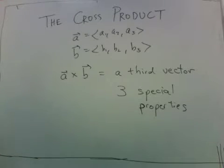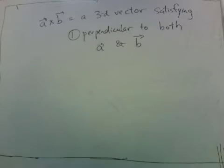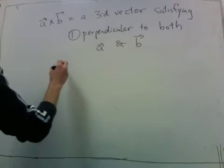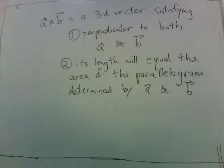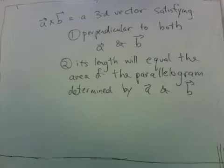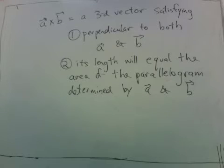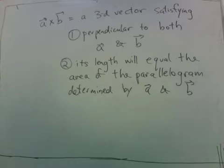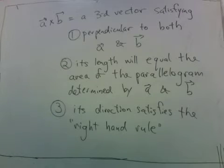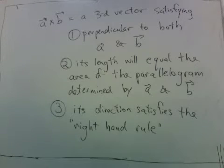The first property is that it will be perpendicular to both A and B. The second property is that its length will equal the area of the parallelogram determined by A and B. The third property is that its direction satisfies the right-hand rule.